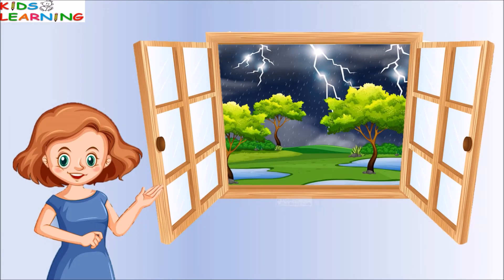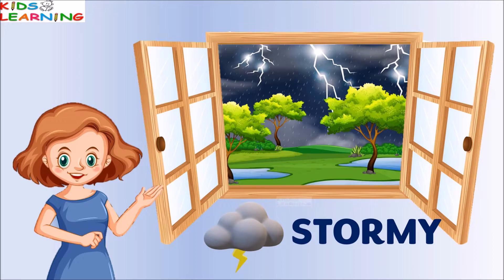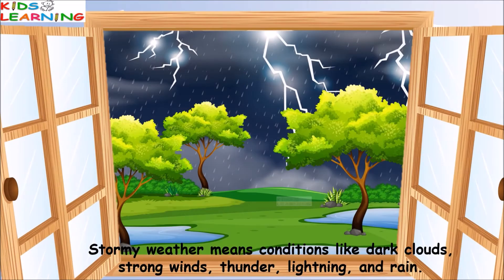Now what's the weather outside? It's a stormy weather. Stormy weather means conditions like dark clouds, strong winds, thunder, lightning and rain.